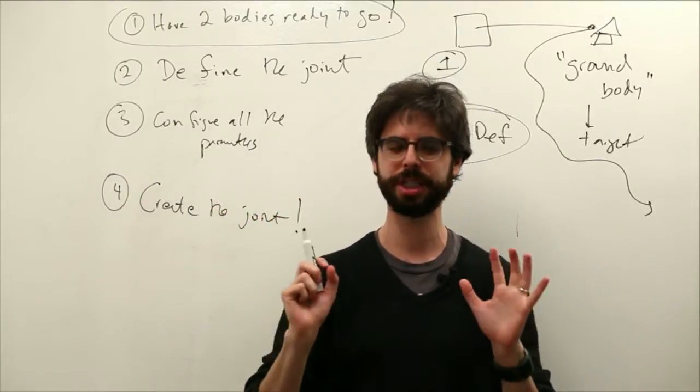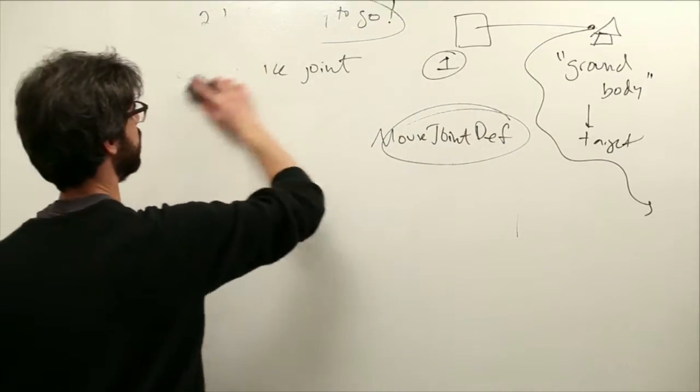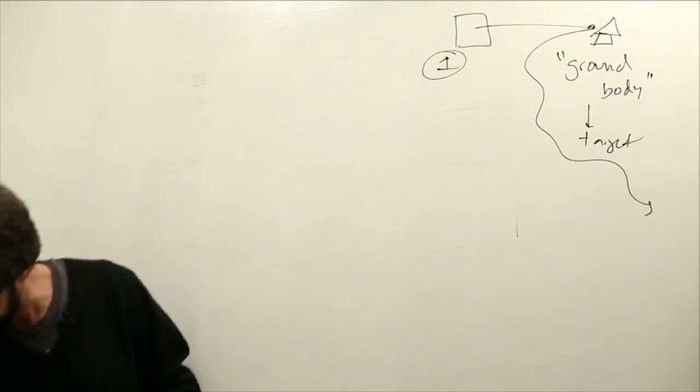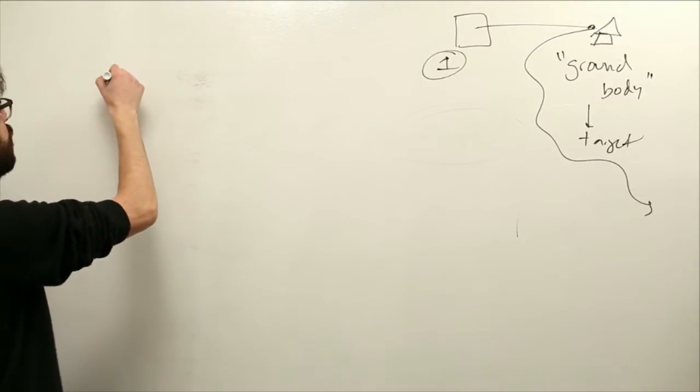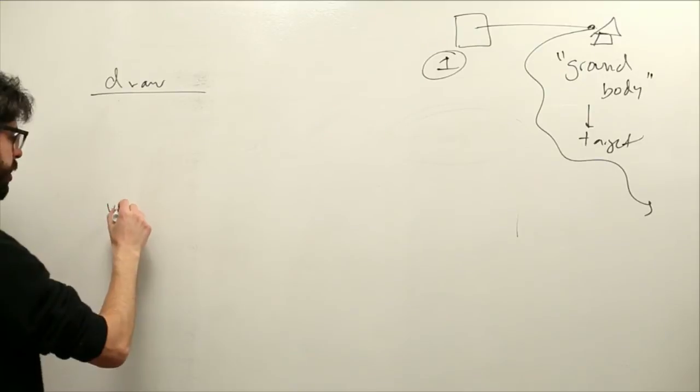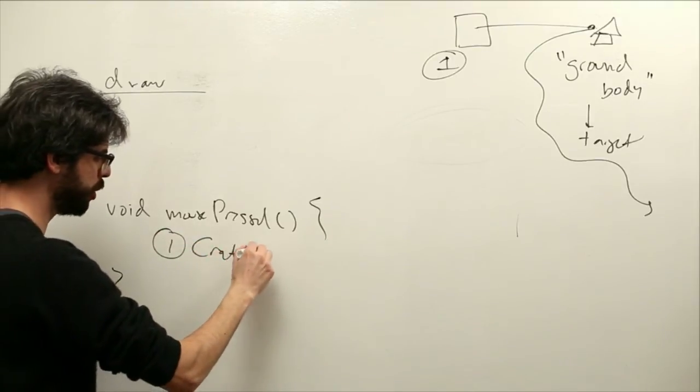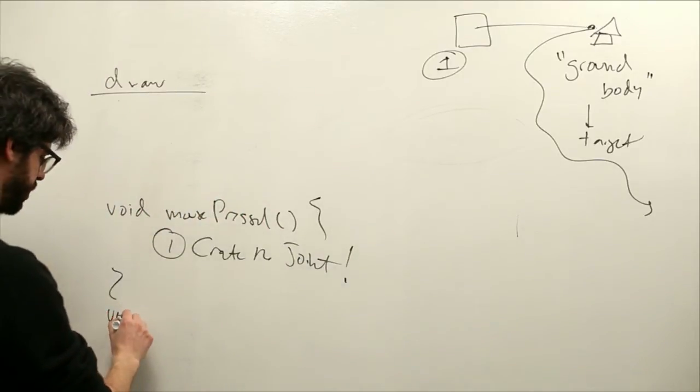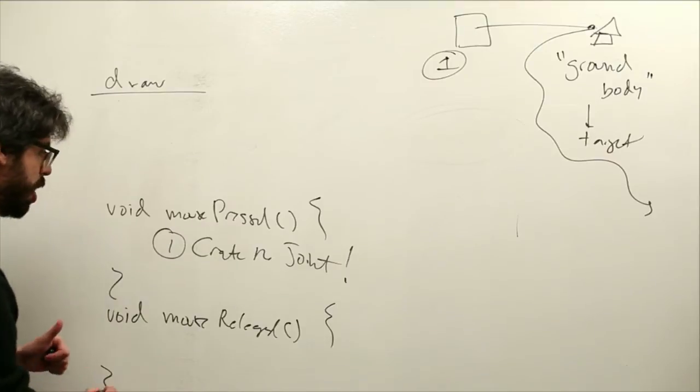But here is something a little bit different that we're going to see in this example. What is something that's a little bit different in this example? In our main program, when we press the mouse, we want to create the joint. So you're going to see void mouse pressed. Here is where we're going to create the joint.